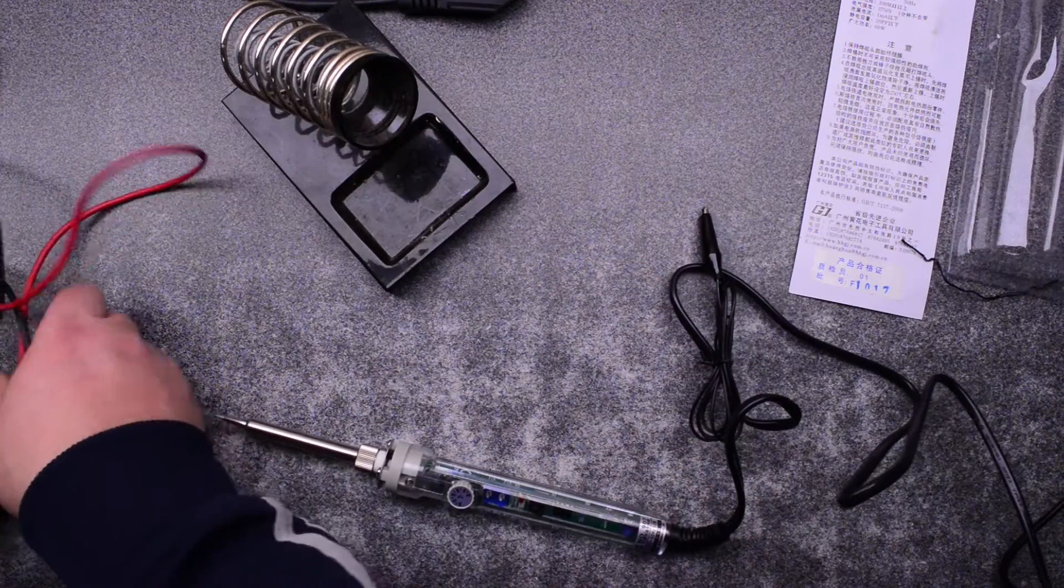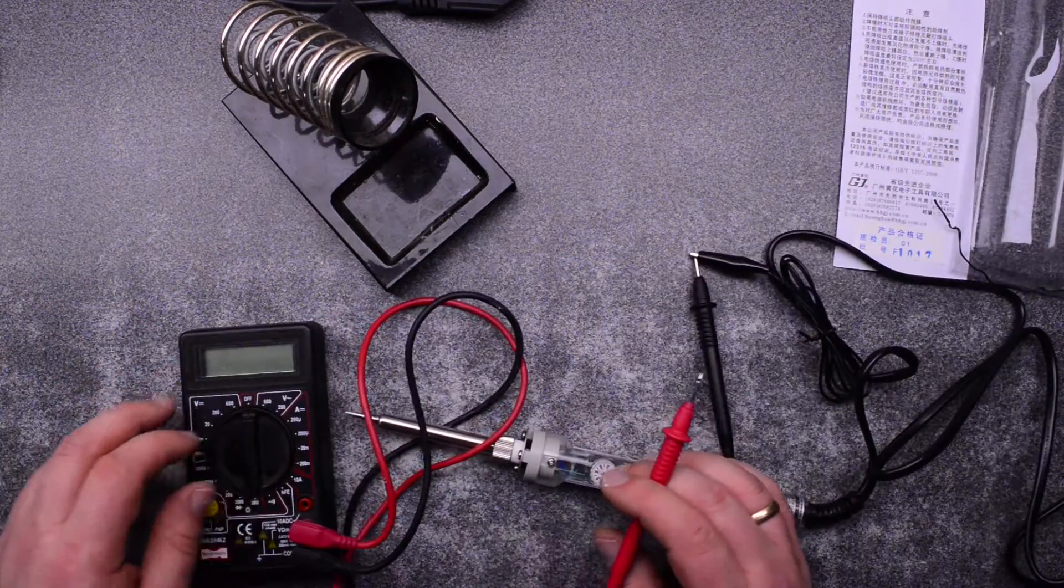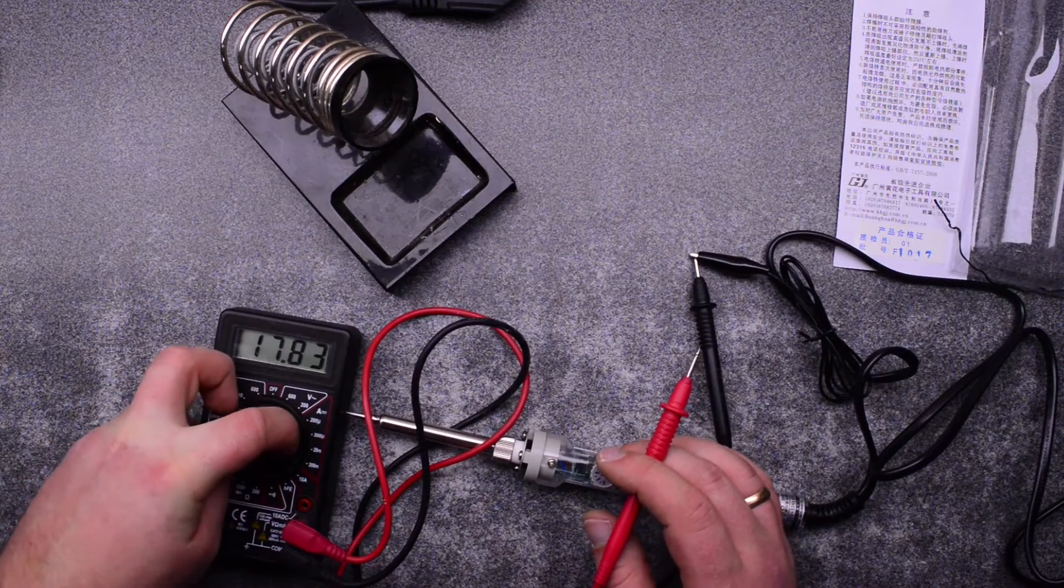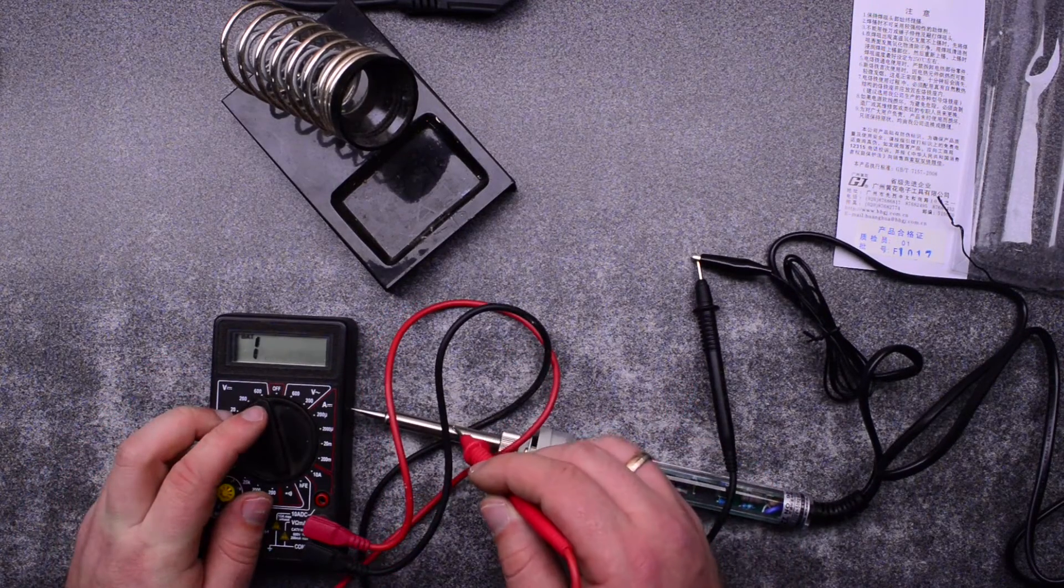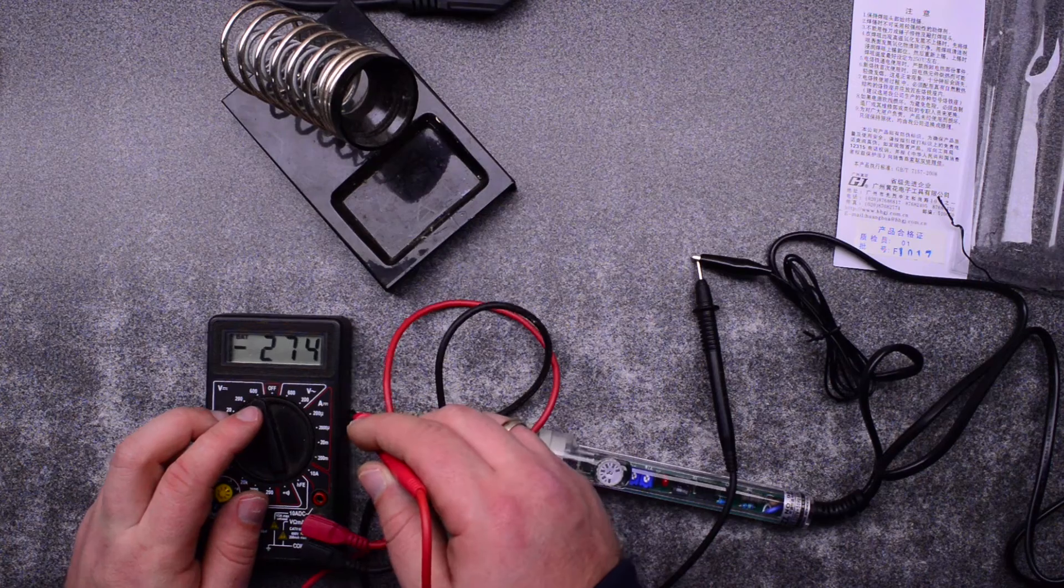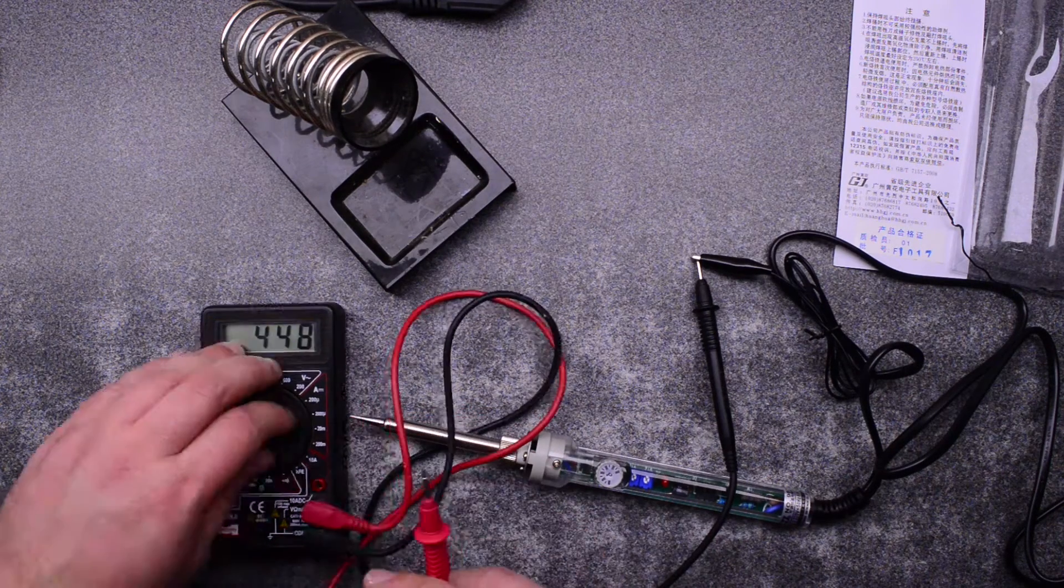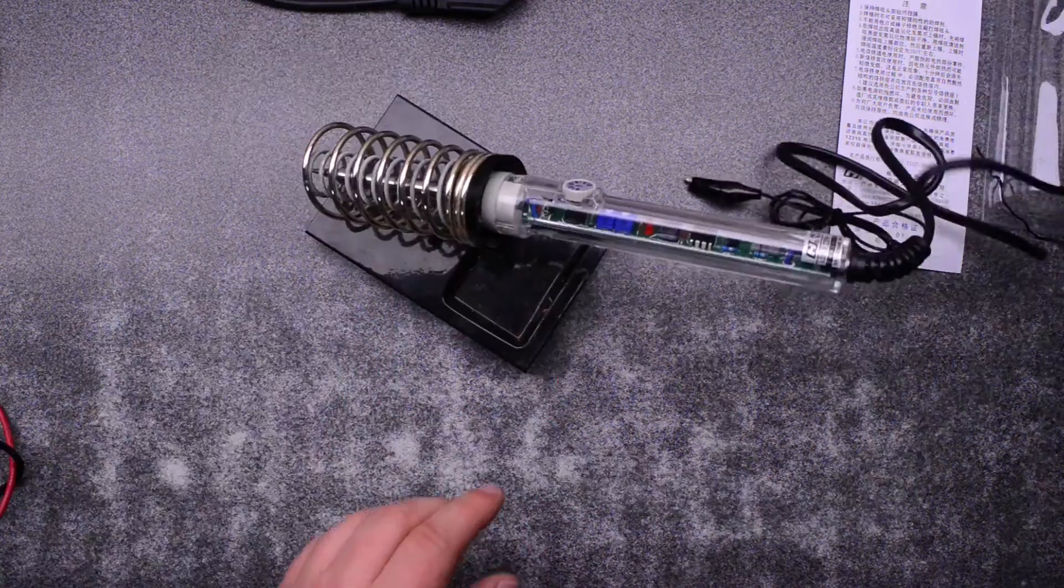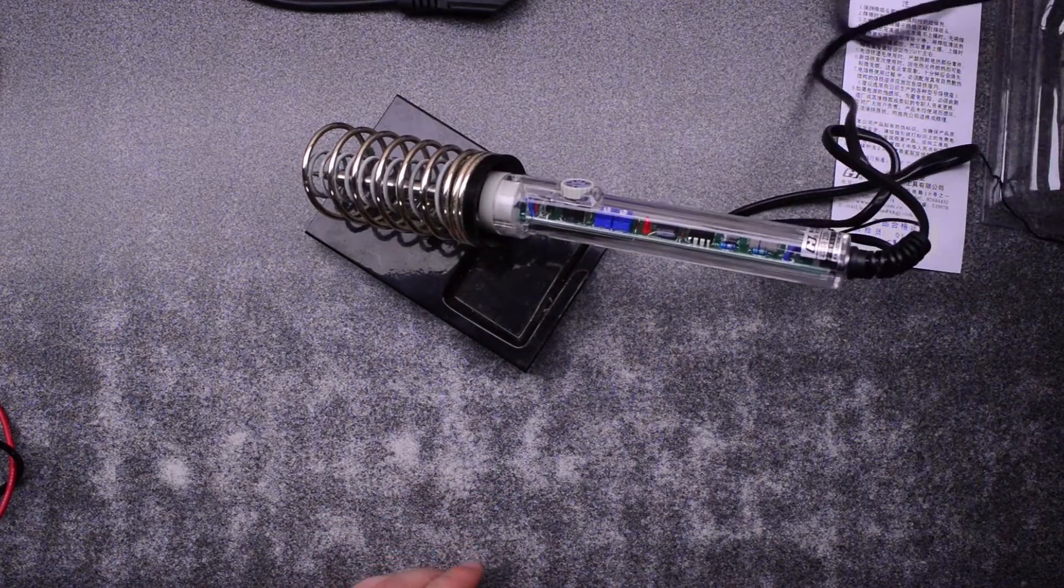So let's test out the grounding tip. Put our multimeter on continuity. Yep. So you can ground your tip. This is very useful if you are working with sensitive electronics. And let's plug it in.